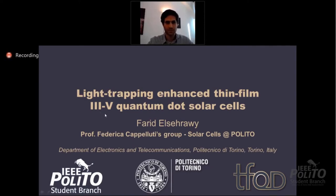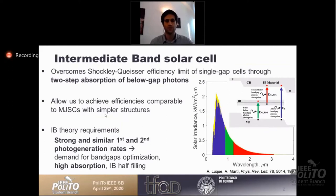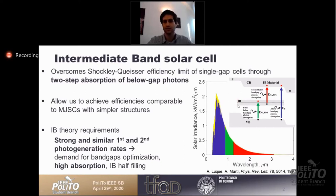First, I'll give an introduction on what the intermediate band solar cell is. With traditional single-junction solar cells, we have absorption of a photon with energy above the band gap, generating an electron-hole pair that is collected. With an intermediate band solar cell, this intermediate band material allows us to absorb two lower energy photons equal to the total energy of the band gap, achieving efficiencies comparable to multi-junction solar cells — in the range of 60% or beyond for solar concentration.